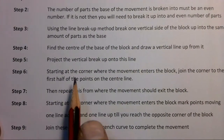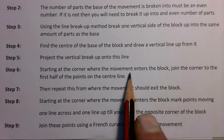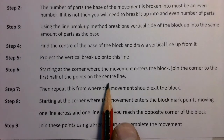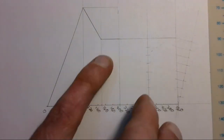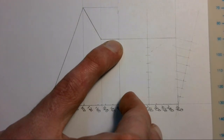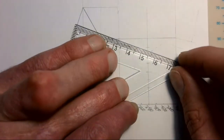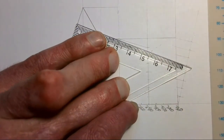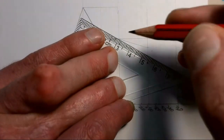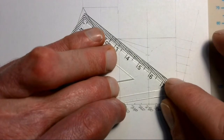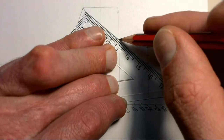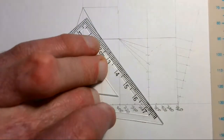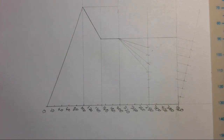For step six, starting at the corner where the movement enters the block, we join that corner to the first half of the points on the center line. We join the entry corner to the first point, then the second point, the third point, and the fourth point — stopping there, only halfway down.